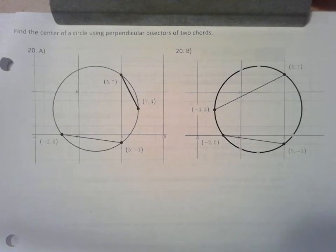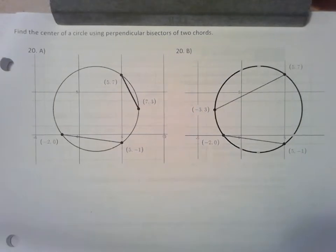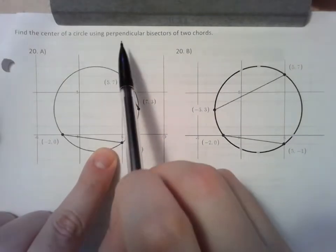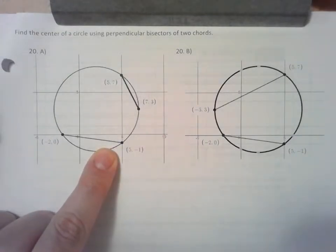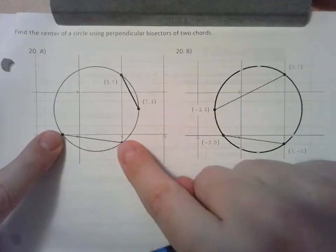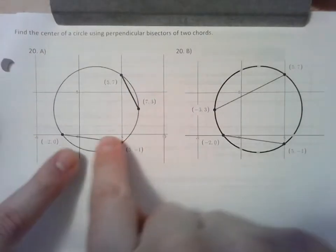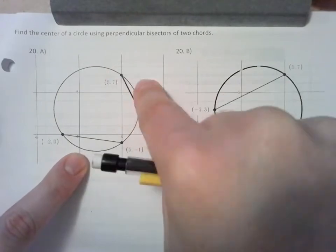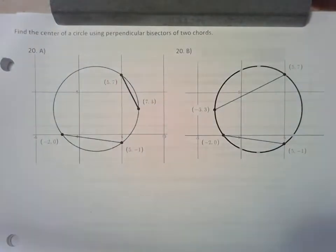In our last video, we're going to find the center of a circle algebraically using two perpendicular bisectors of two different chords in a circle. There's a theorem that says that if you take any two chords in a circle, find their perpendicular bisectors, they will intersect at the center of the circle.